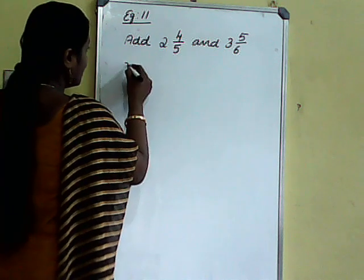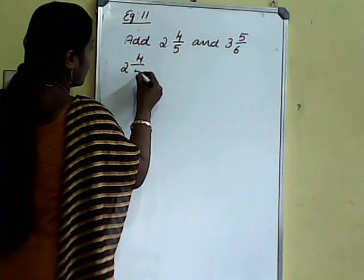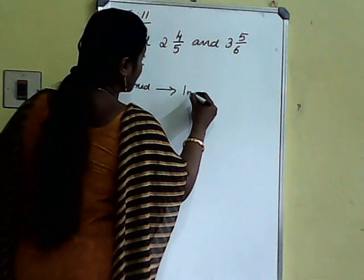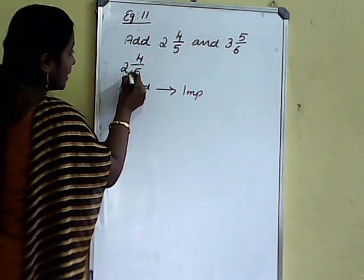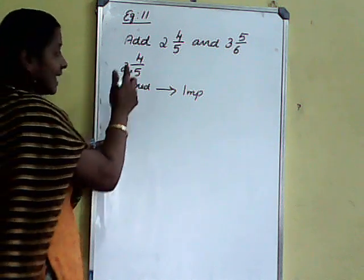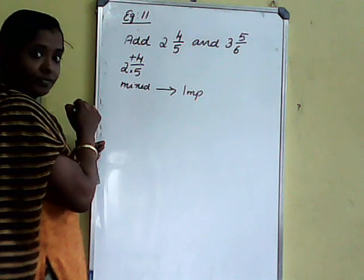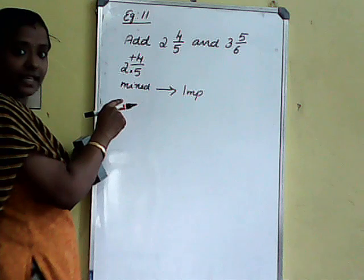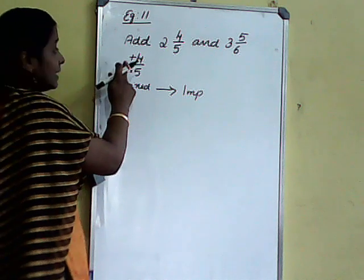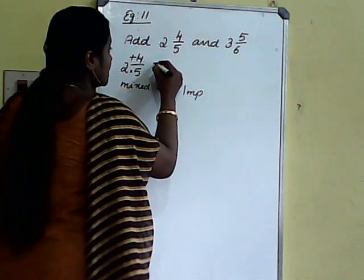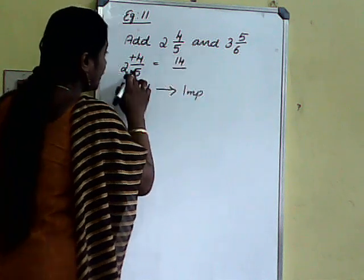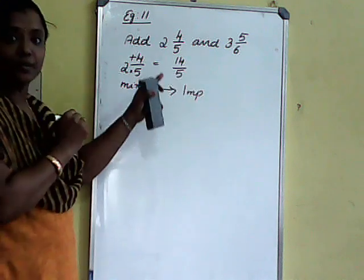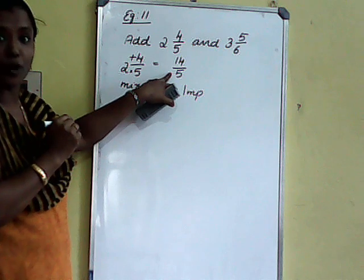So here mixed fraction 2 and 4 by 5 — how to convert this into an improper fraction. That is 2 into 5; here we do the operation multiplication. That answer plus 4, and we write it as the numerator; the denominator here is the same. So 5 into 2 is 10, 10 plus 4 is 14. So this is 14, and the denominator is 5. That is 14 by 5. So we convert the mixed fraction to an improper fraction.